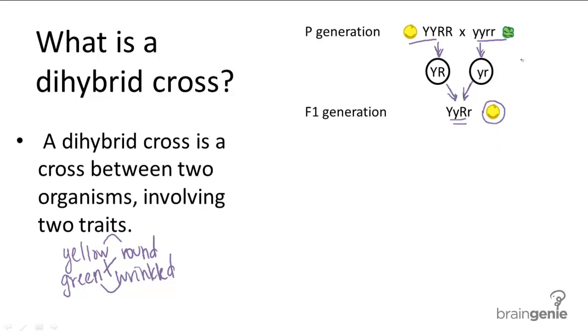So this is the most simple dihybrid cross. Just like the most simple monohybrid cross, it's pretty basic and it's easy to figure out what the offspring will be. But just as Mendel did a heterozygous monohybrid cross, Mendel also did a heterozygous dihybrid cross.